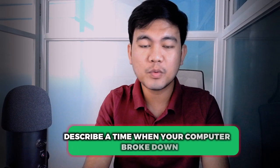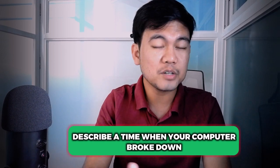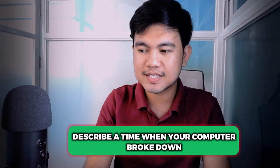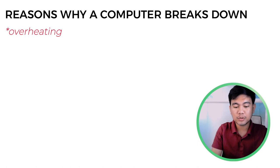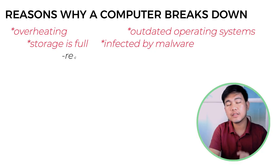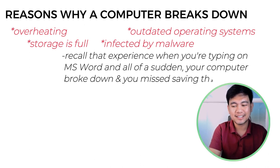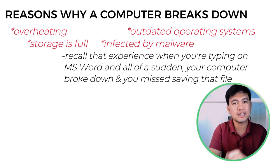The next cue card is a time when your computer broke down. Understand some of the reasons why a computer breaks down. Possible reasons include overheating, outdated operating systems, the storage is full, or the computer gets infected by malware. Recall that experience when you're typing on Microsoft Word and all of a sudden your computer broke down and unfortunately you missed saving that file.